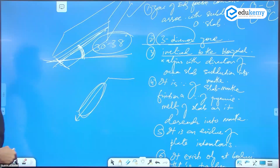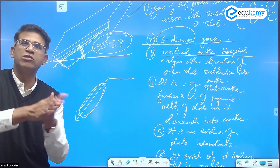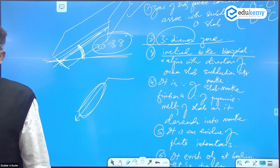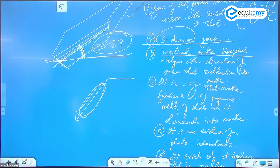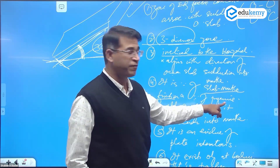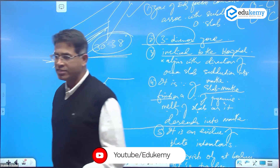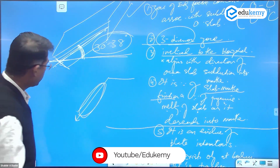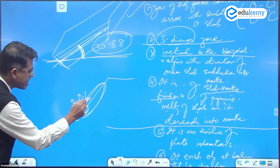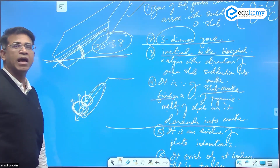The fourth point: it is because of slab-mantle friction. Why is this happening on Earth? Because as the slab goes inside, it is rubbing against the mantle, so there is friction going on. It is also because of progressive melting of the slab as it descends into the mantle. This melting can create disturbance and eddies. So this rubbing action with the mantle and the melting of the slab create all the earthquakes.